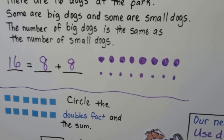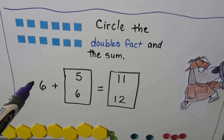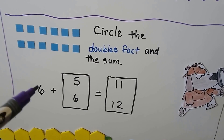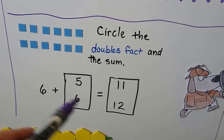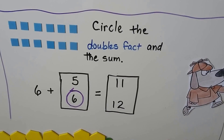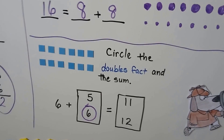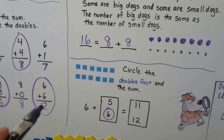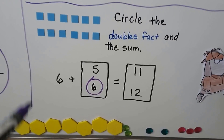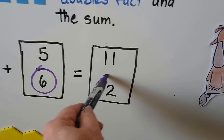See how drawing counters or dots can help us? Circle the doubles fact and the sum. Would 6 plus 5 be a doubles fact? Well, doubles fact means we are adding the same number, so that would be 6 plus 6. And what would be the correct sum — would 6 plus 6 be 11 or 12? We can look back at our other problems where we did 6 plus 6 and it was 12. We can also count on: 7, 8, 9, 10, 11, 12. So we know for sure that 12 is the correct sum.